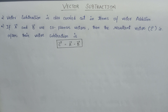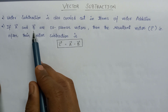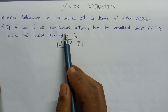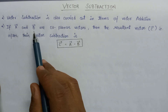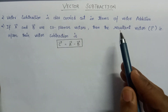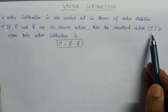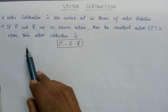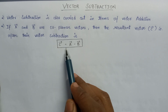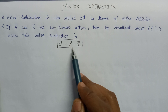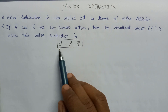Likewise, we will talk about the vector subtraction method. If A and B are two vector quantities that are coplanar vectors — coplanar vectors are those vectors which lie in the same plane — then the resultant vector, denoted by C vector, after their vector subtraction will be C vector equals to the subtraction of A vector and B vector.